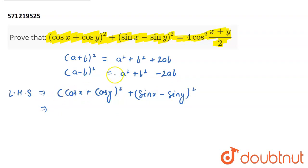Now, if I use the first formula, (a + b)², then I am able to write down the expansion of this particular term. So, putting a = cos x and b = cos y, it becomes cos²x + cos²y + 2 cos x cos y.